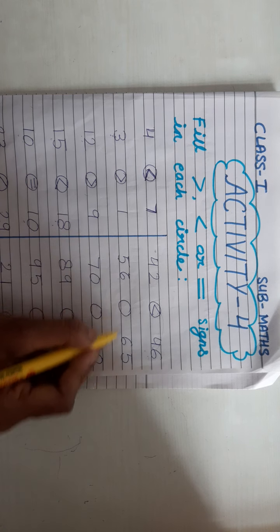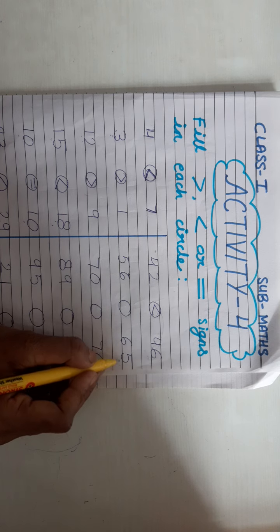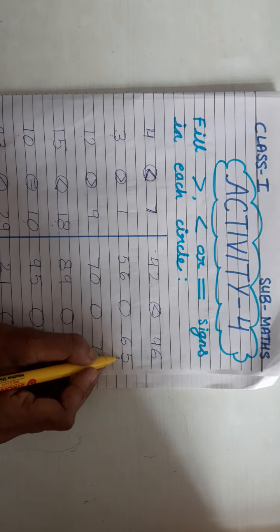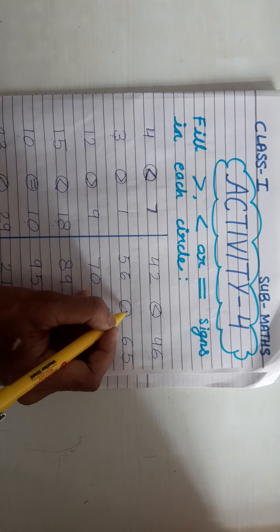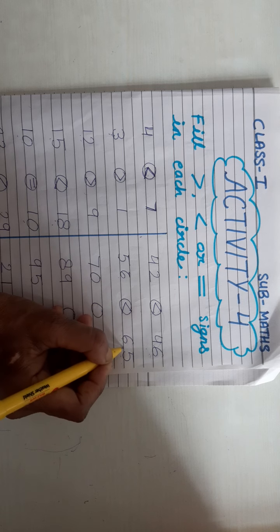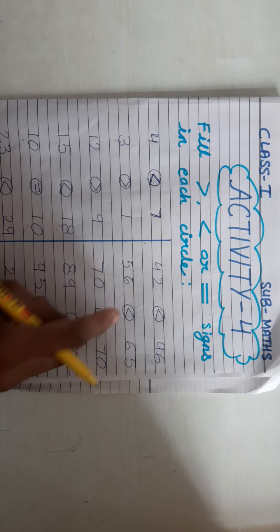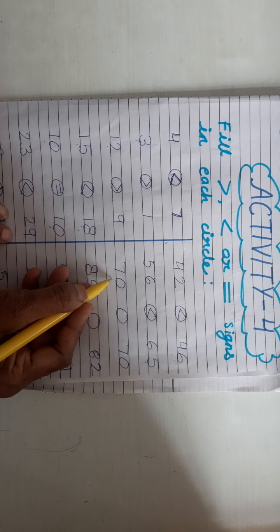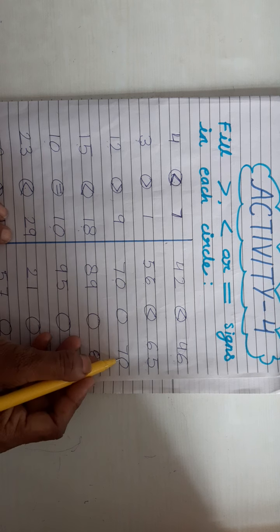This is 56 and this is 65. 65 is greater. And this is also 70 and 70 — both are the same number.